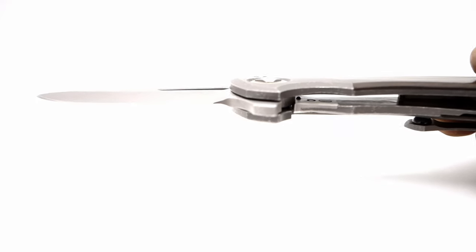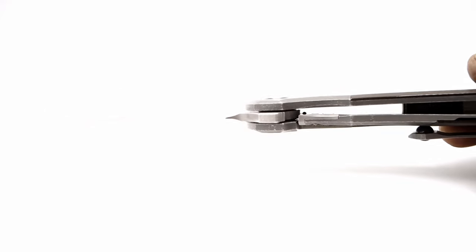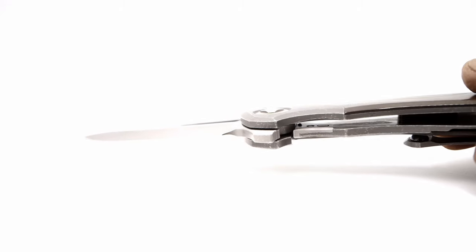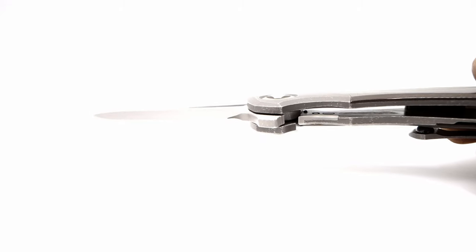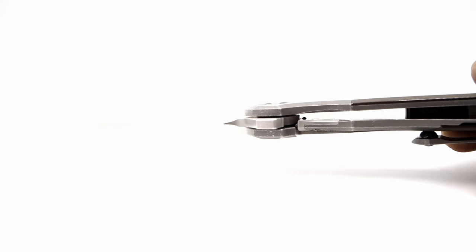The frame lock has a steel insert that doubles as an over-travel stop, due to its extended lip that fits into a milled pocket, and hinders the lock from overextending in a downwards or outwards direction.